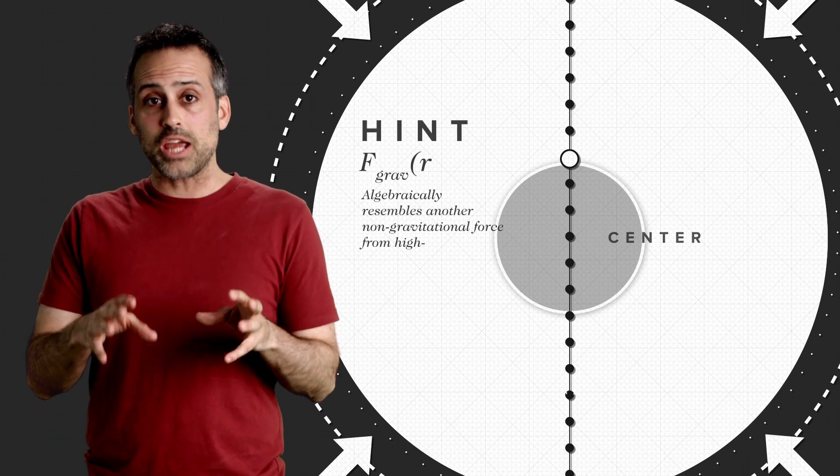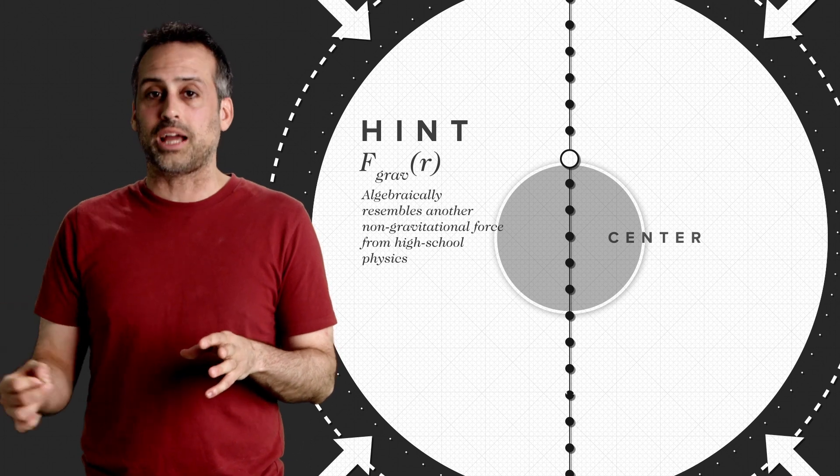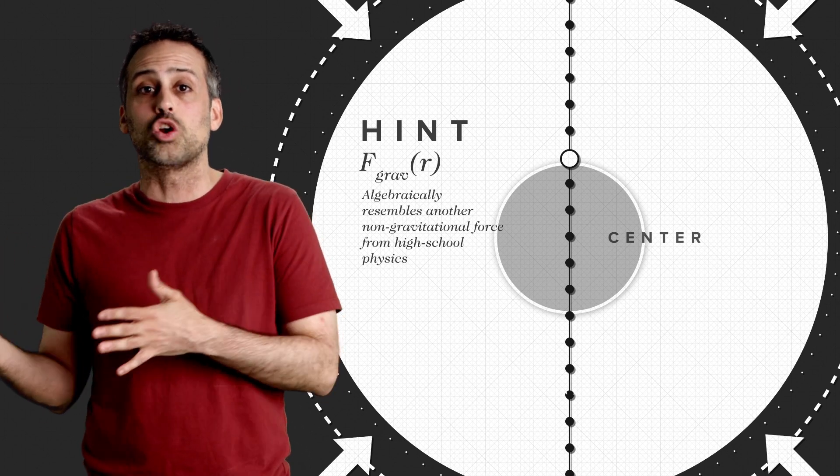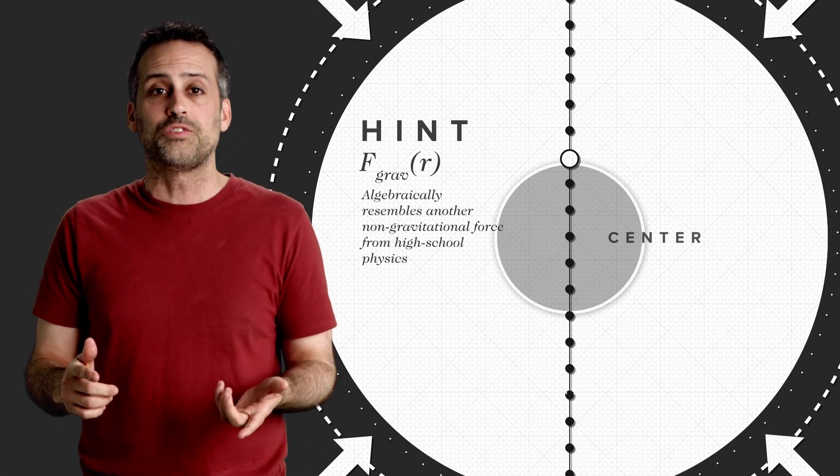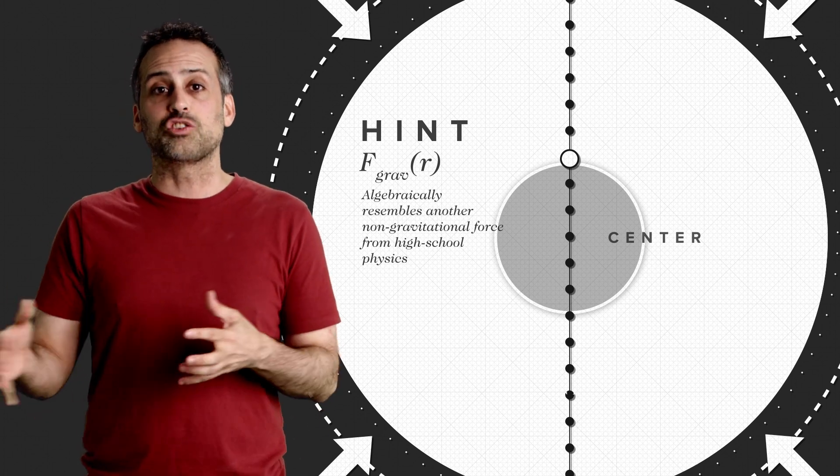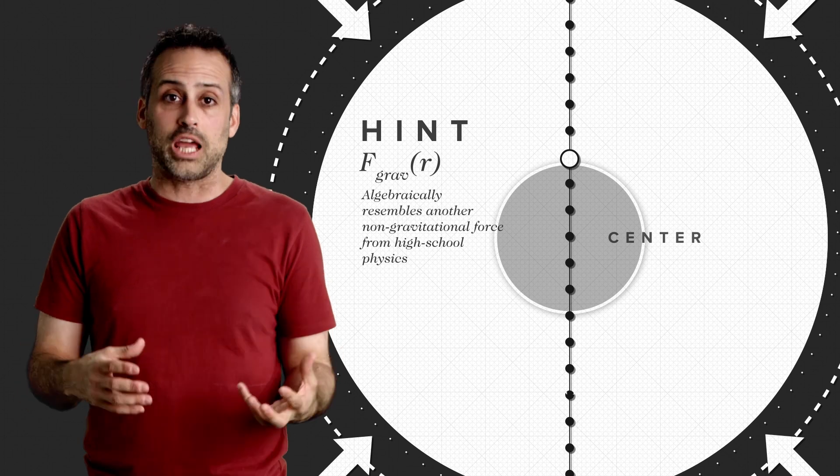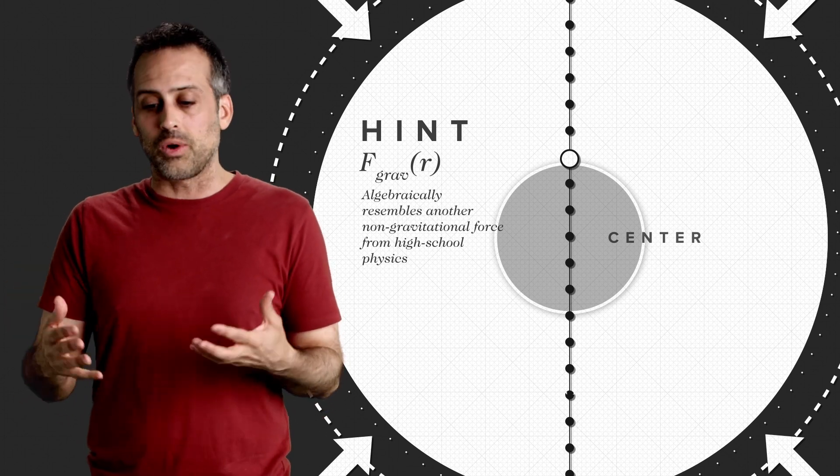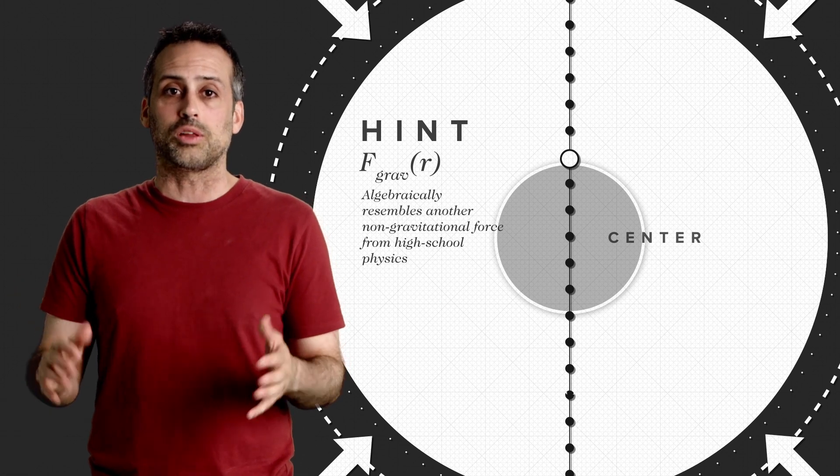Here's a big hint. The expression for the gravitational force on the second particle when it's inside the planet should algebraically resemble a familiar non-gravitational force that you also study in high school physics. In fact, drawing an algebraic analogy between the gravitational and non-gravitational situations is actually the key to figuring out the travel time of the second particle without using calculus.